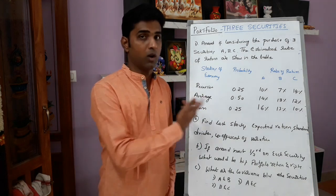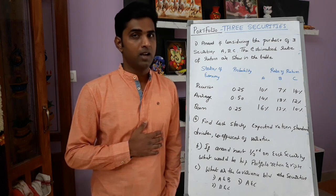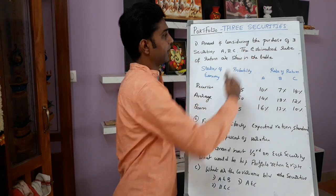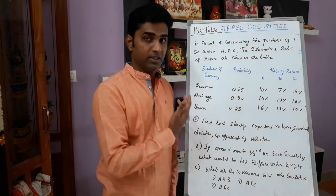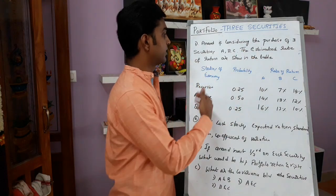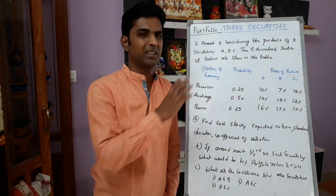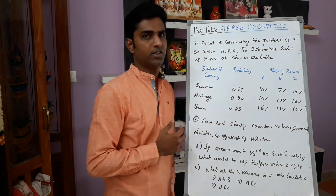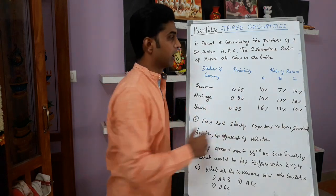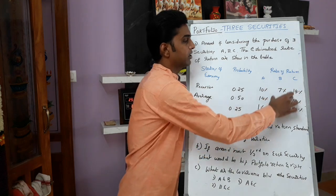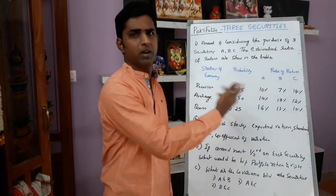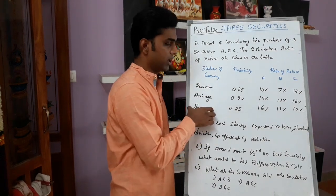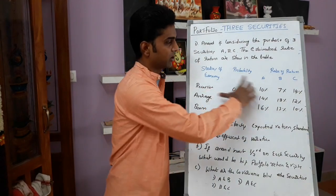If it is three securities, how to calculate the return and risk. Coming to the problem: Anand is considering the purchase of three securities A, B, and C. The estimated rate of return are shown in the table. There are three states of economics. Probability is given, and also returns of each security — Company A, Company B, Company C — and how much returns they will give you during the periods.